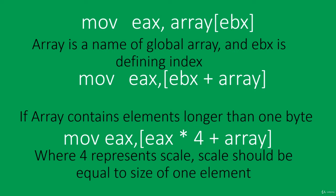Let's say we have an array of integers and we want to access the element at index 4. If we simply add 4 to our array address, that is the same as adding 4 bytes — but since an integer value is 4 bytes, adding 4 would only get us to the second element. So we need to multiply the index by something called scale, which is just the size of one element — for integers, that would be 4.